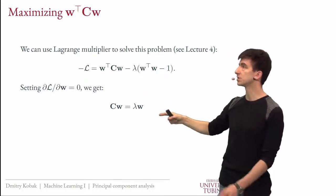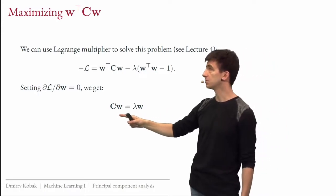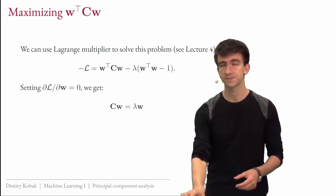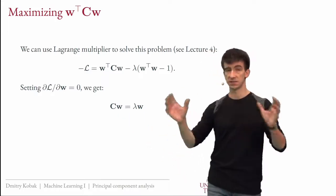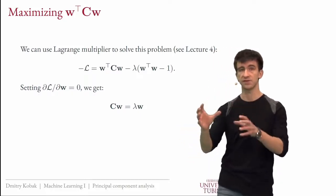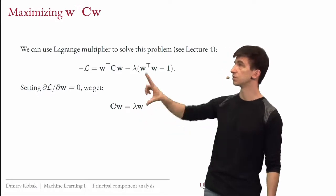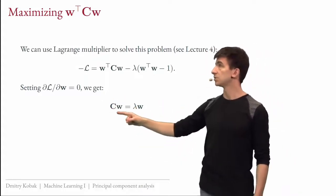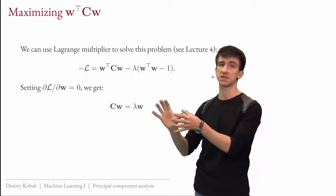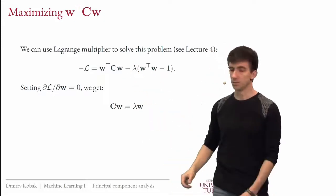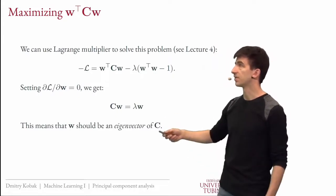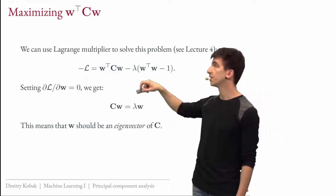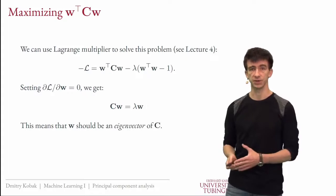This is a curious equation: our unit vector W has a special property — when multiplied by matrix C it just gets scaled. Usually when you multiply a vector by a square matrix, it rotates and changes length. But sometimes the vector stays in the same direction and just stretches — this is called an eigenvector of matrix C. By definition, whenever CW equals lambda W holds, W is an eigenvector of C with lambda being the corresponding eigenvalue.